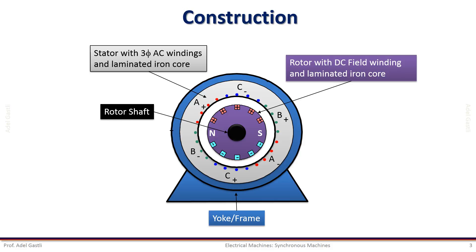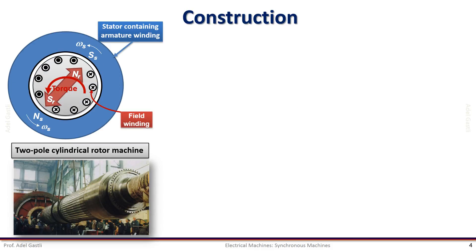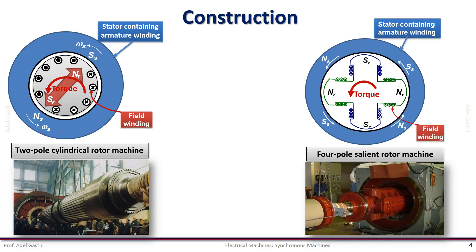Based on the rotor structure, we can distinguish two types of synchronous machines. Cylindrical or round rotor types, which are used for high-speed applications, have usually long but thin shafts. The second type is salient pole rotor types, which are used for low-speed applications and have usually short but thick shafts. The salient pole structure cannot rotate at very high speed because of high windage losses created by the wind friction effect.